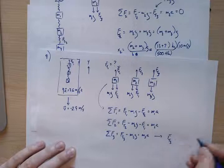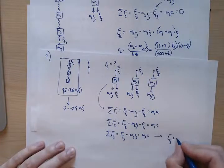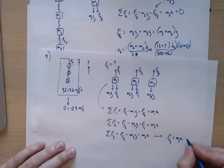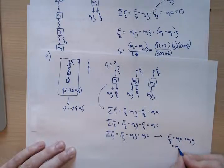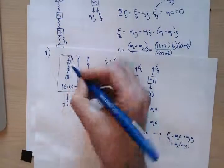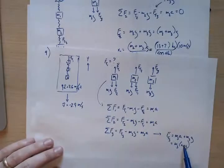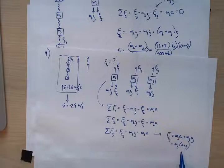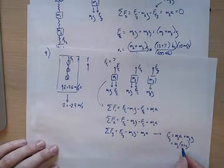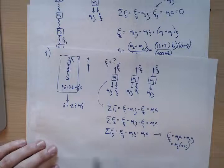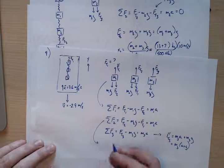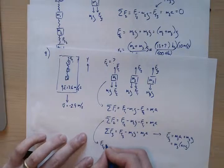Solving for the tension in the bottom spring: ft3 equals m3a plus m3g, which equals m3 times (a plus g). So to this spring it feels as though mass three is heavier — as if gravity is a little stronger. That's the effect of an accelerating frame of reference. You've all felt this in an elevator when it takes off — you feel temporarily heavier. The effective gravitational acceleration increases.